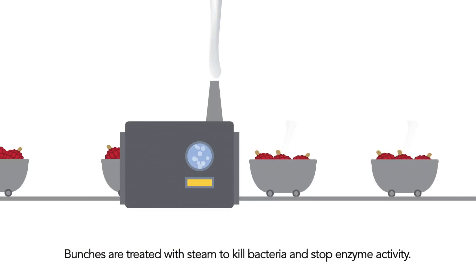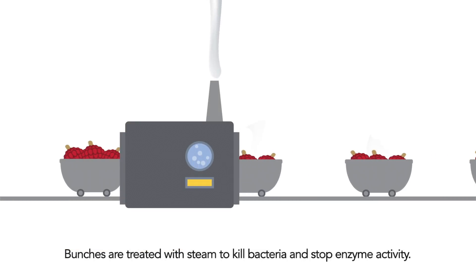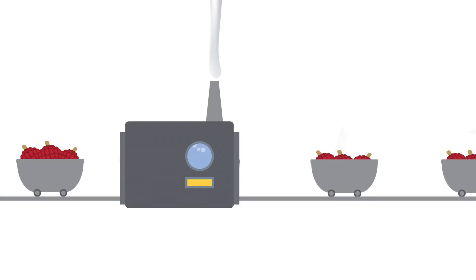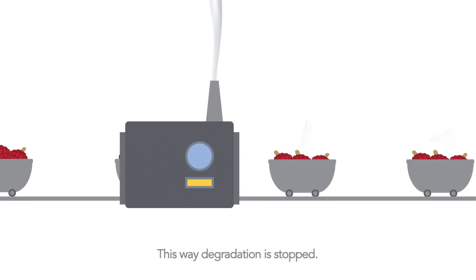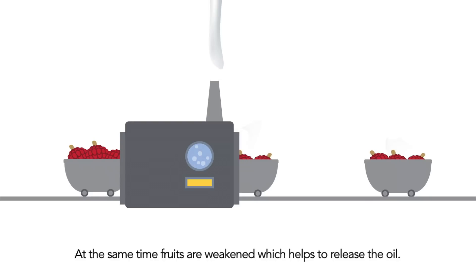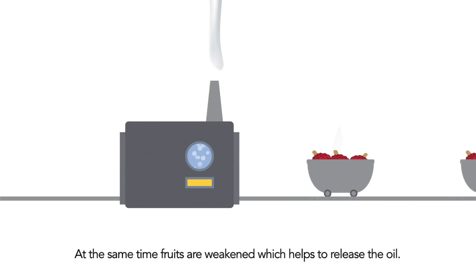Bunches are treated with steam to kill bacteria and stop enzyme activity. This way, degradation is stopped. At the same time, fruits are weakened, which helps to release the oil.